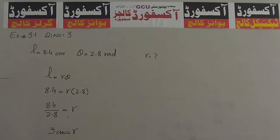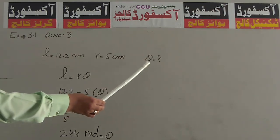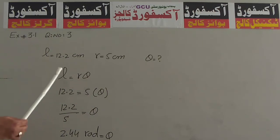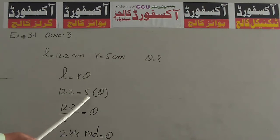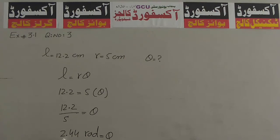Question No.3 second part: L = 12.2 cm, R = 5 cm, θ की कीमत निकालेंगे. L = Rθ, तो 12.2 = 5 × θ. θ = 12.2 / 5 = 2.44. θ की कीमत हमेशा Radian में होती है, तो θ = 2.44 Radian.